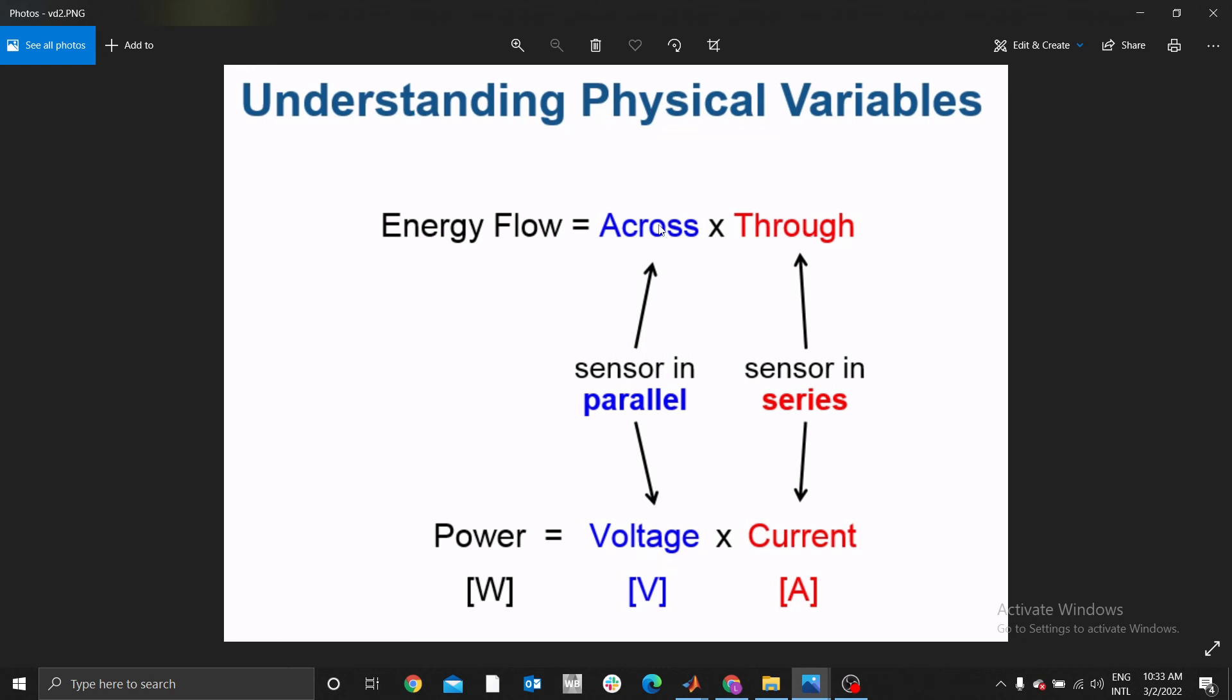Then current—you always connect your current through the circuit, which is in series. Across means parallel, through means series. Therefore, that's how variables are usually connected.